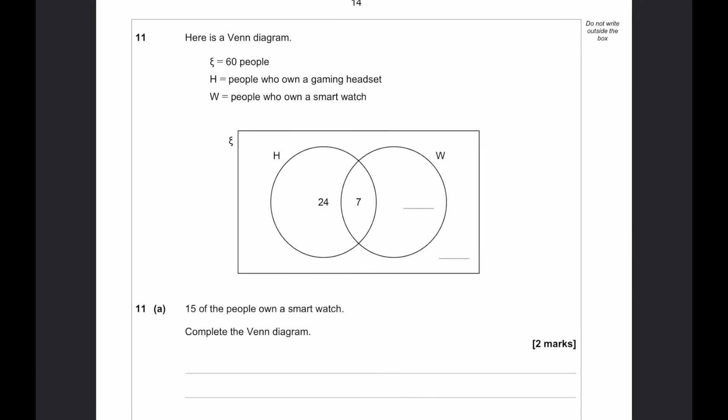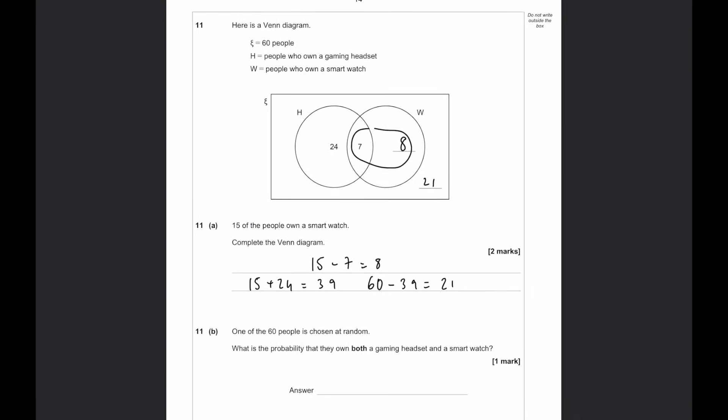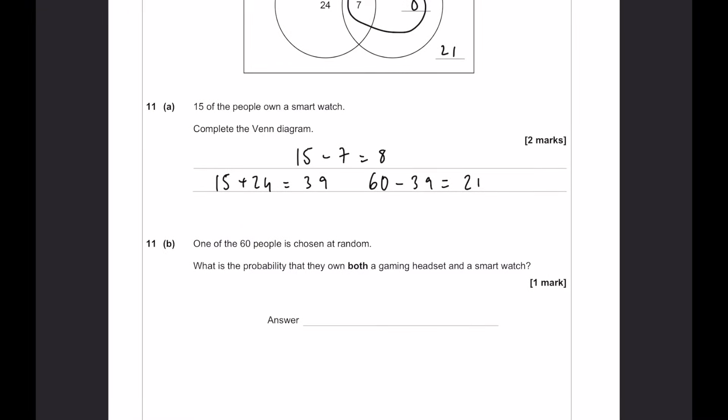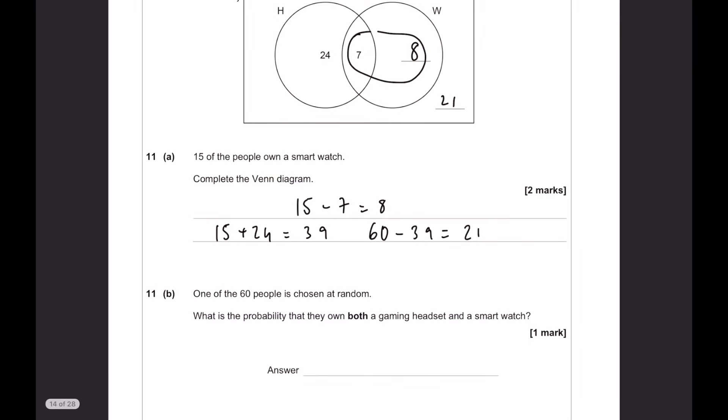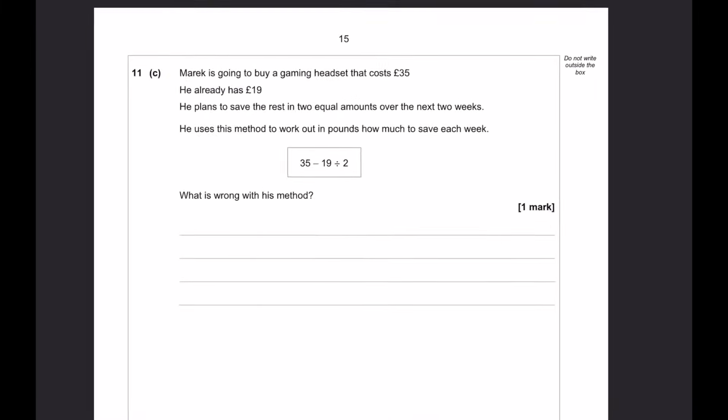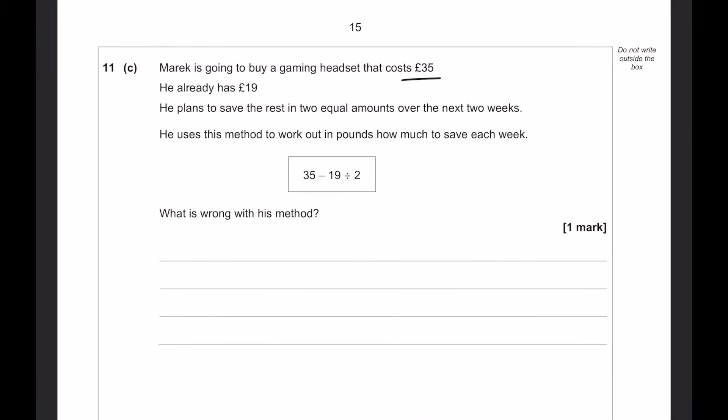There are some calculators in the box. 220 are scientific, 30 are not. What percentage of them are scientific? This is going to be 220 out of the total, 250. So, that can be, say, 22 over 25, which is 88%. Again, put that in your calculator, times it by 100, you're going to get 88. Here we have a Venn diagram, 60 people total, gaming headset and smartwatch. We're told 15 of the people own a smartwatch. Now, if 7 of them are in the middle, that must mean that 15 minus 7 gives us 8 in here. And then if we add up all of those, so that's 15, 15 add 24 is 39, and then 60 take away 39 leaves us with 21 people on the outside.